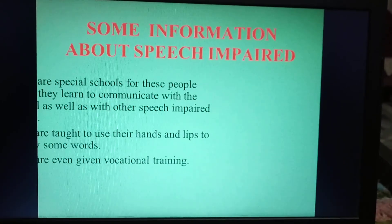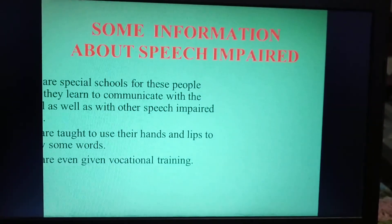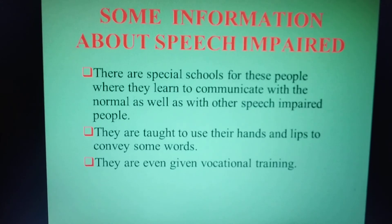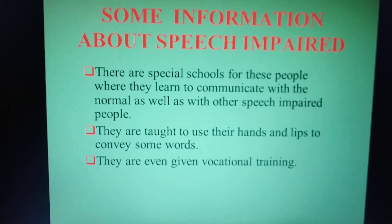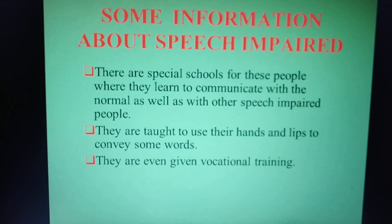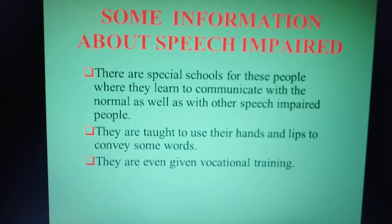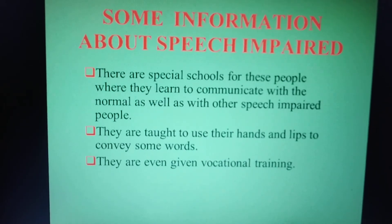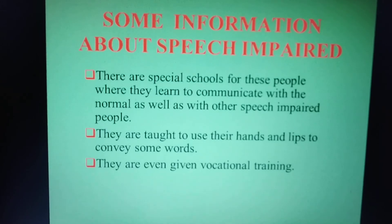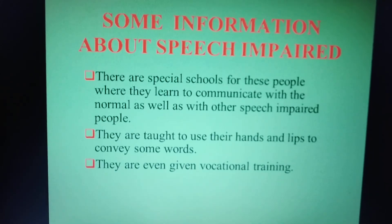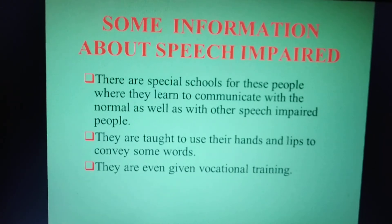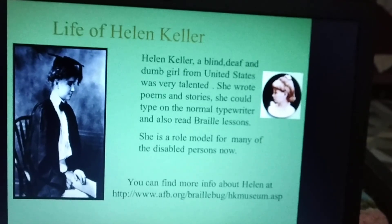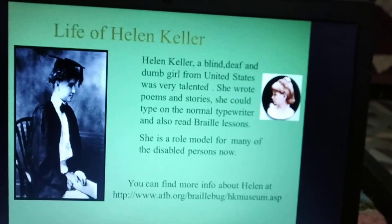Some information about speech impaired. Who are speech impaired? The person who cannot speak or hear properly. There are special schools for these people where they learn to communicate with normal people as well as with other speech impaired people. They are taught to use their hands and lips to convey some words. They are given vocational training, which means they are given some kind of training with which they can do their work, and they can even get a job by doing that course.